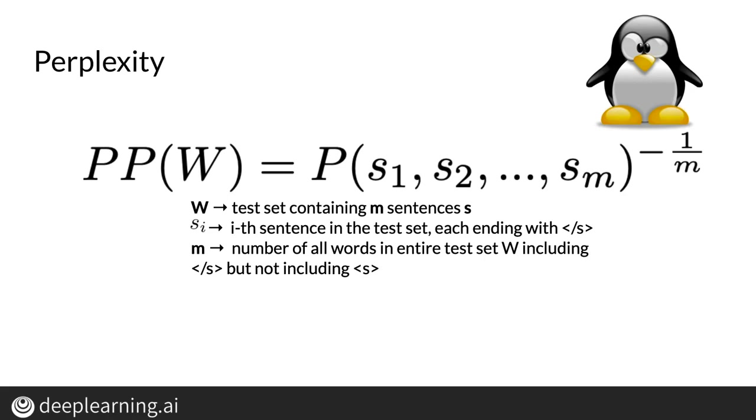So the higher the language model estimates the probability of your test set, the lower the perplexity is going to be. As a side note worth mentioning, perplexity is closely related to entropy, which measures uncertainty.